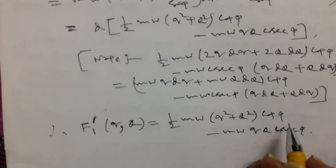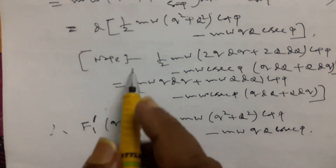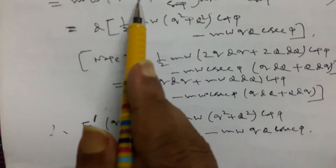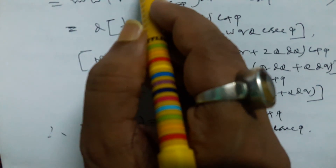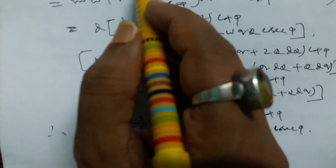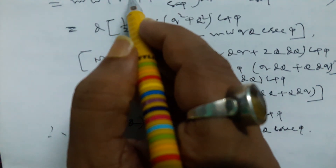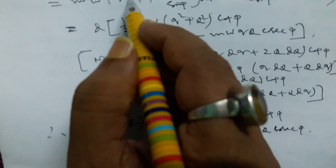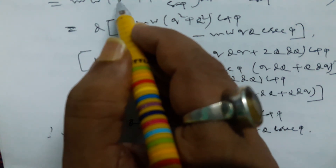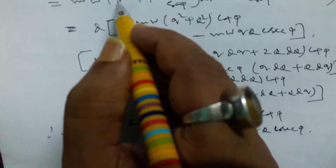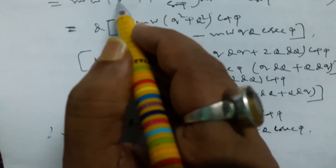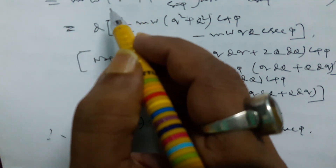Finally, we have found the canonical transformation and the first generating function of this specific type of canonical transformation. This is a good example. We end our discussion here — if you like this video, like it, share it, and subscribe to the channel. Thanks for watching.